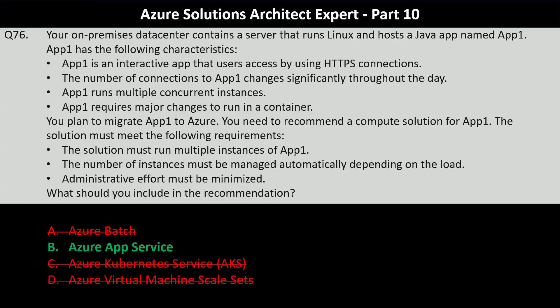Azure App Service is ideal for hosting web apps and APIs. It supports HTTPS connections, automatic scaling based on load, and multiple instances — all while minimizing administrative overhead. That is why Azure App Service is the correct answer.